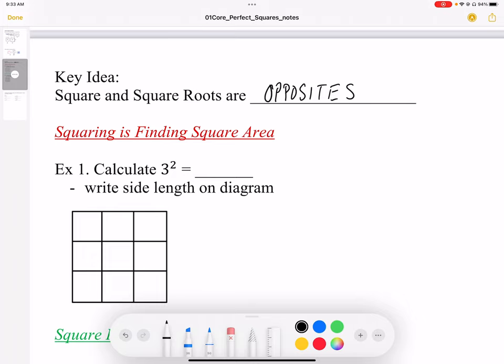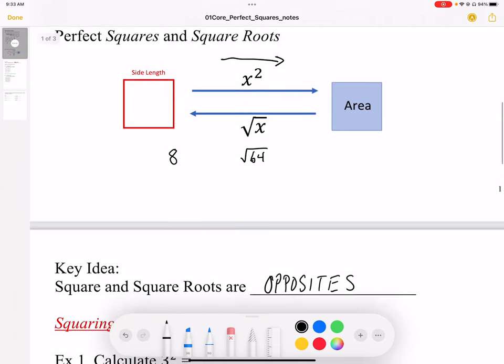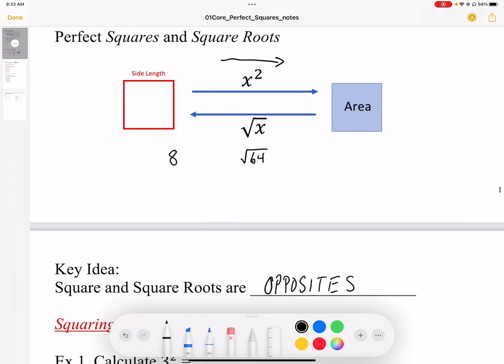So squares and square roots are opposites. Squaring goes from side length to area, it's going in this direction. Square rooting is going in this direction—we take area, a big number, and we square root it to get the side length, which is a smaller number.